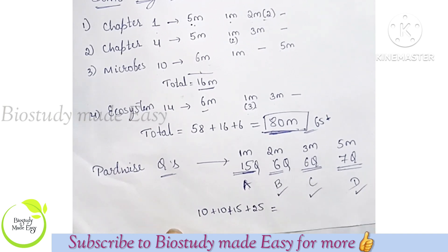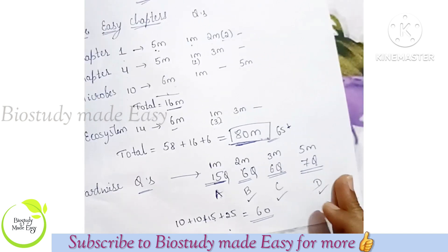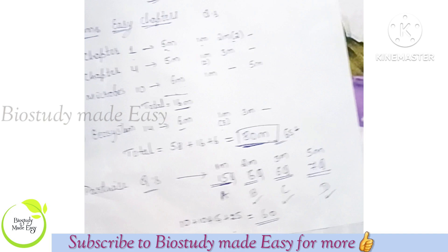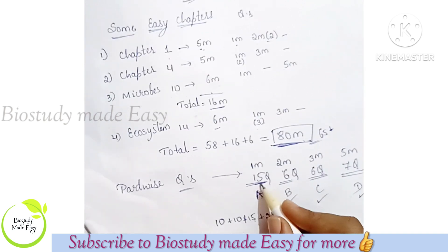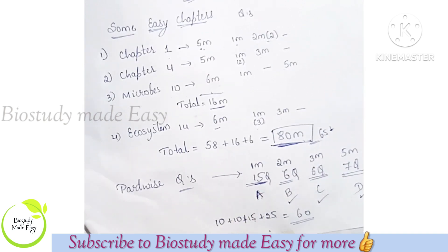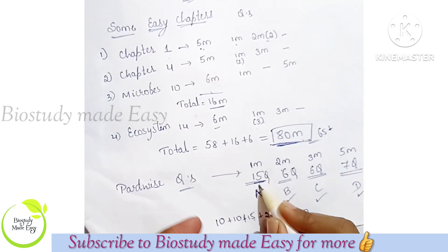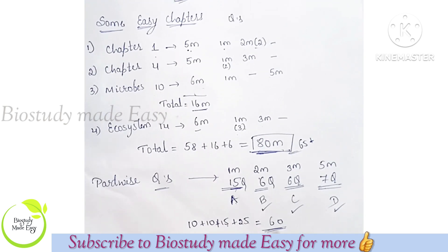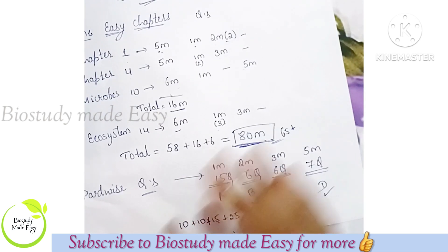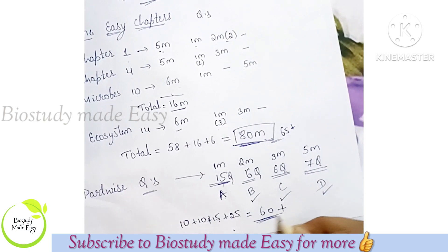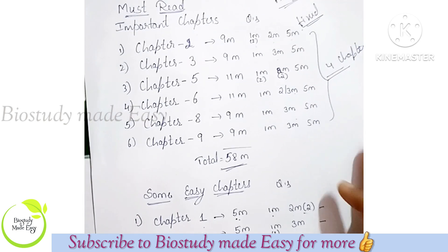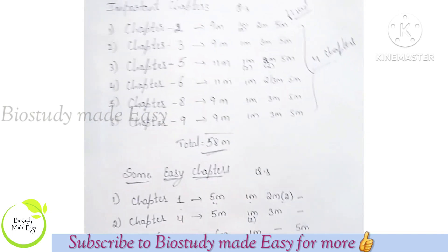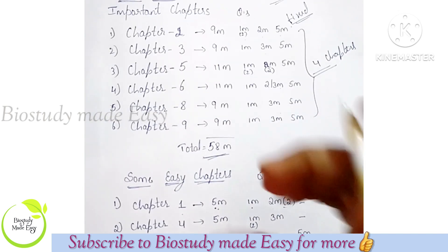So 60 marks — you can for sure score that. Even if you get only 10 marks in Part A, you still have a chance to score 60. So almost around 60 plus you can score by leaving out these chapters. So you will definitely pass — don't worry.